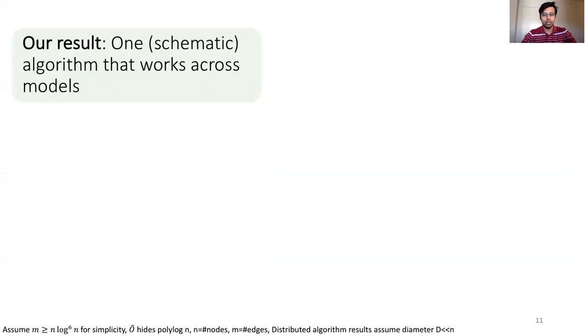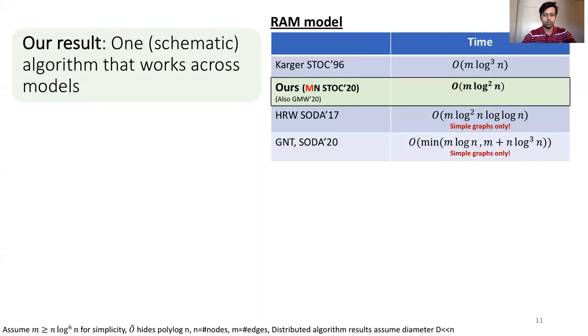Now we are ready to present our results. We make improvements in the state of the art of all three models of computation. In the sequential model, we improve Karger's algorithm. The result is highlighted in green. A similar result has also been achieved independently by Gawrychowski and others, and went on to win the best paper award in ICALP 2020, congratulations to them.